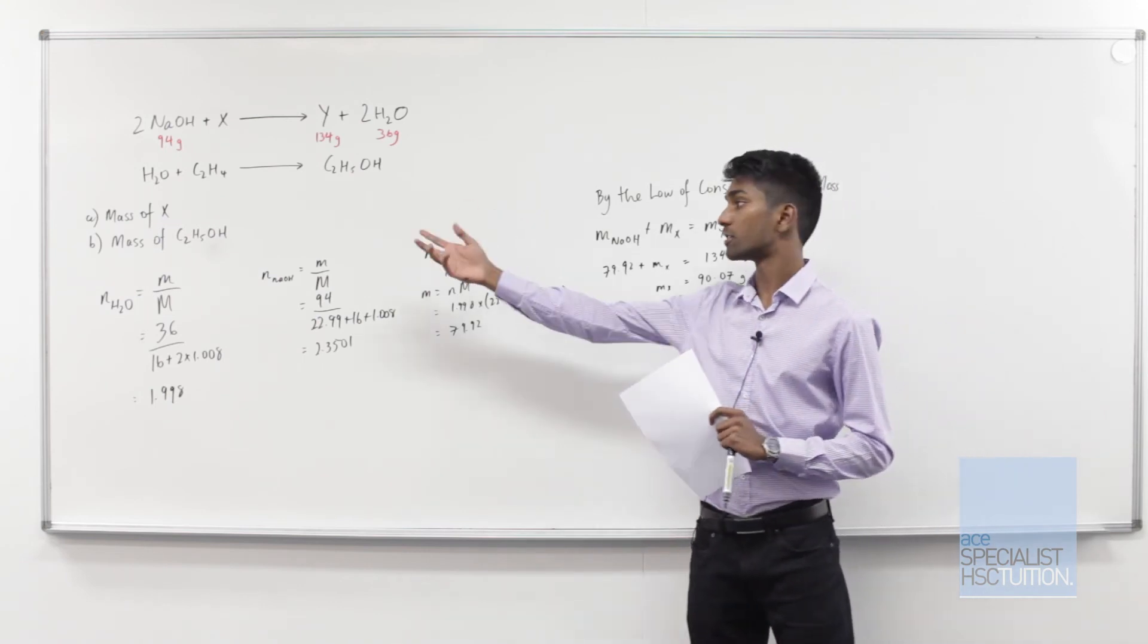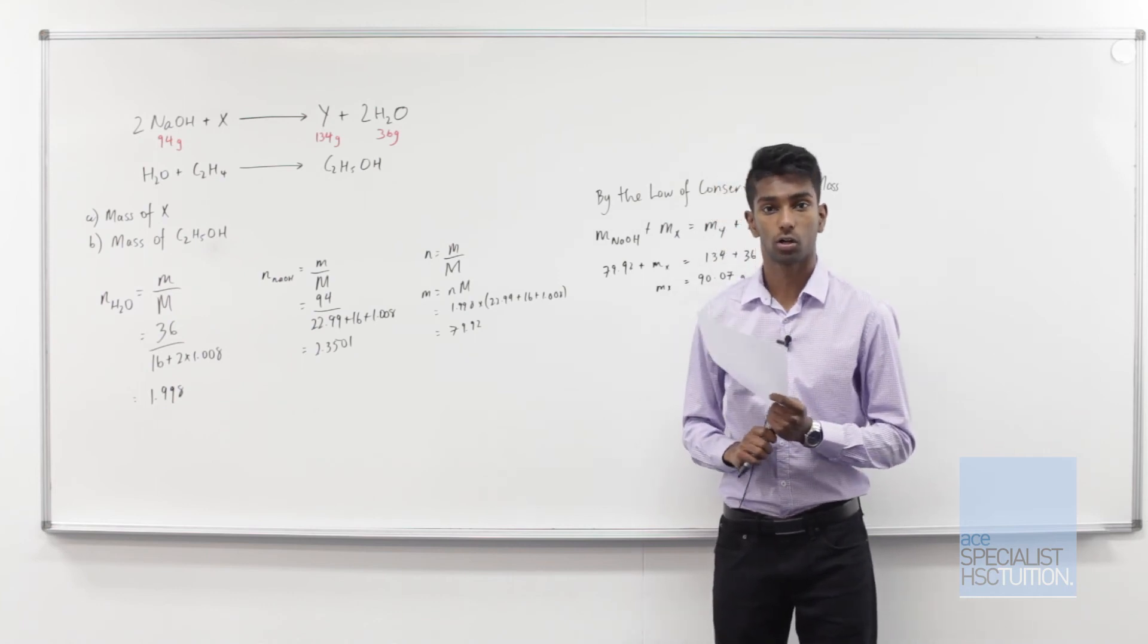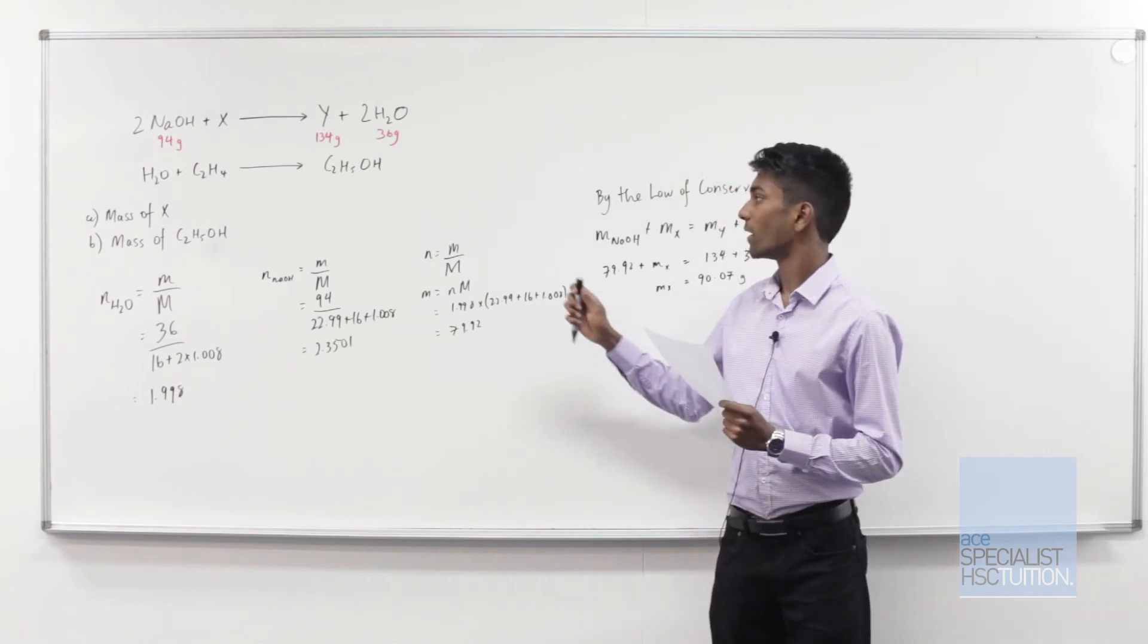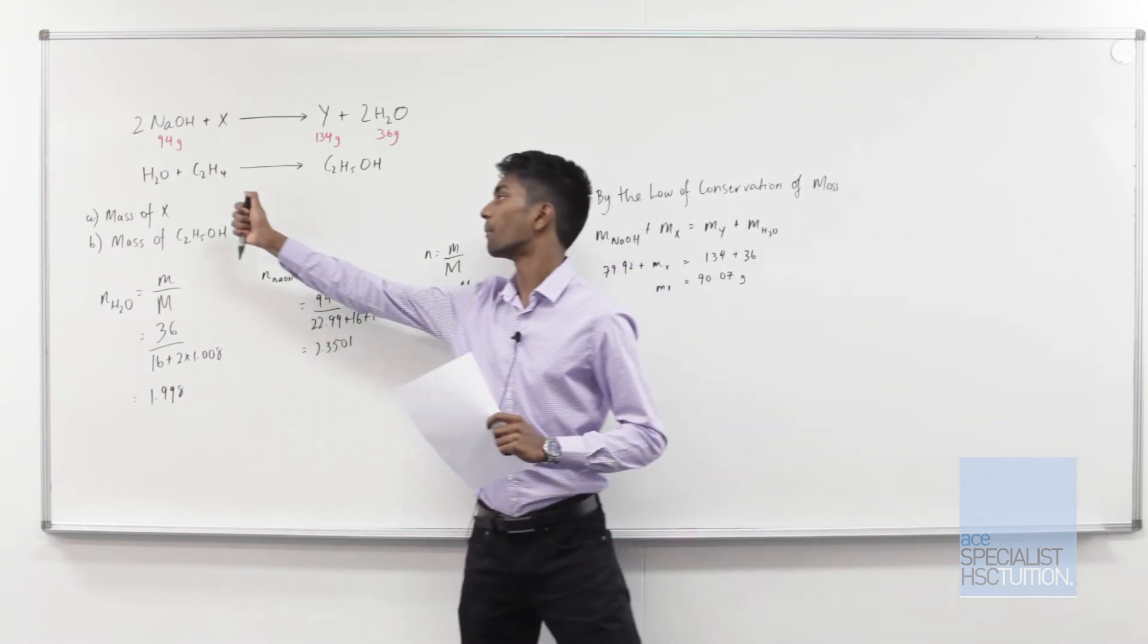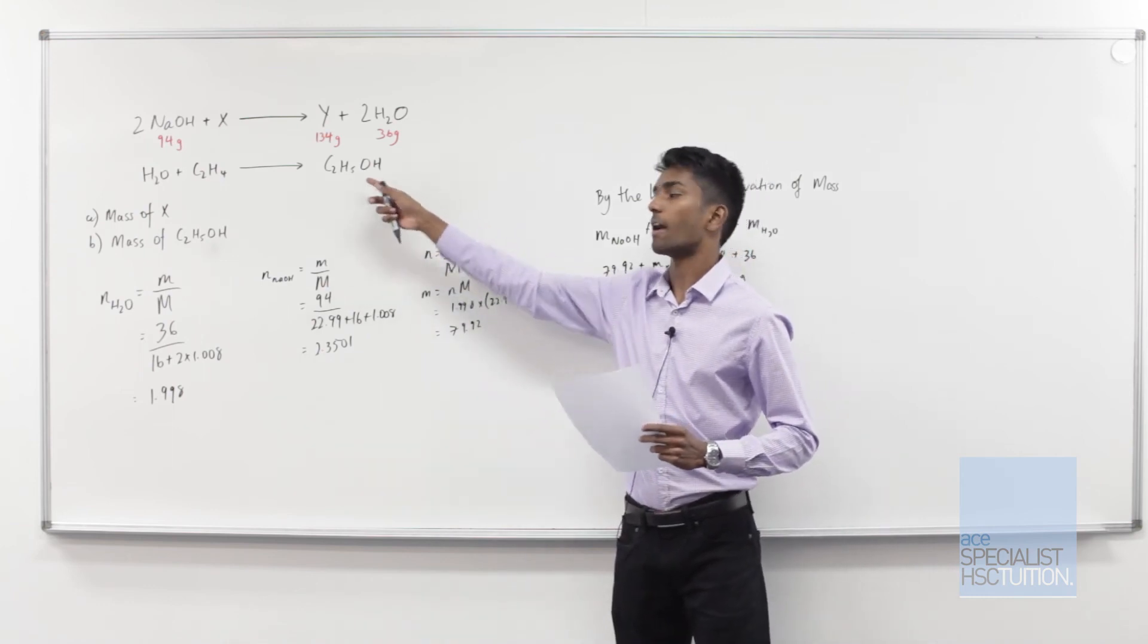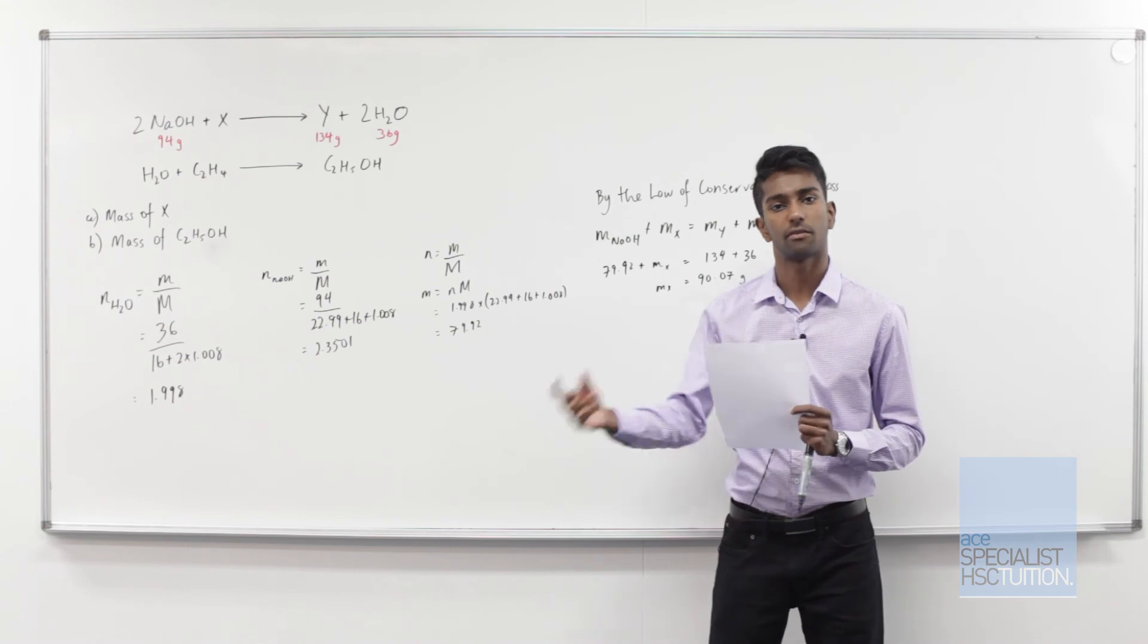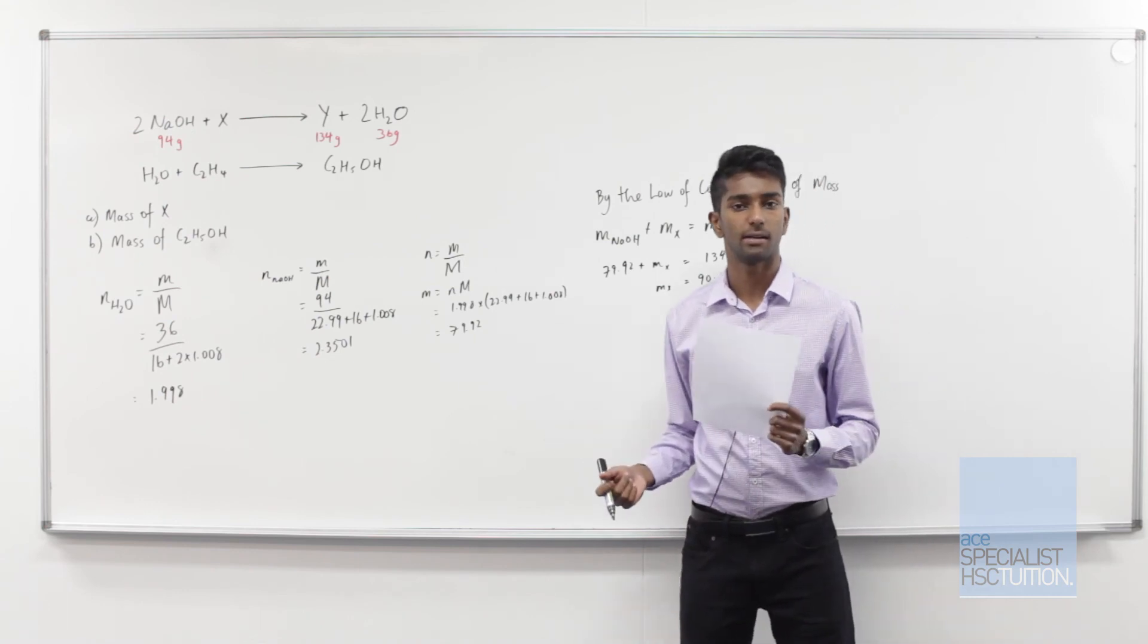Now, to move on to the second part, which is to determine the mass of ethanol, we need to simply find the moles of H2O, which we've already done, and then use a molar ratio to find the moles of ethanol and then use a molar calculation to convert that to mass, which will give us the answer that we need.